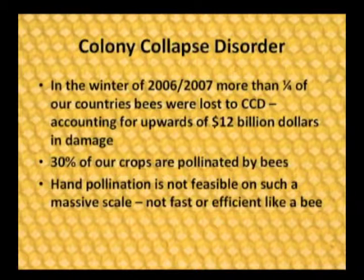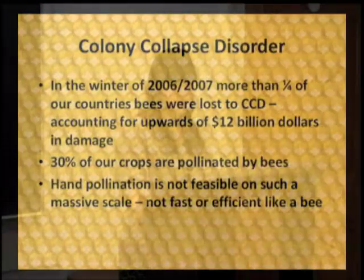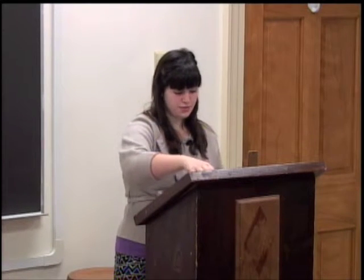There has recently been an issue with the disappearance of bees. In the winter of 2006 and 2007, more than a quarter of the USA's bees were lost to Colony Collapse Disorder, accounting for upwards of $12 billion in damage to the agricultural sector. Thirty percent of our crops are directly pollinated by wild bees alone. Pollination is the only way we get plant and animal food — hand pollination is not feasible. In China, the Sichuan province is attempting hand pollination, but a human can only pollinate in the tens to hundreds range of plants per day, whereas bees naturally pollinate thousands of plants per day.